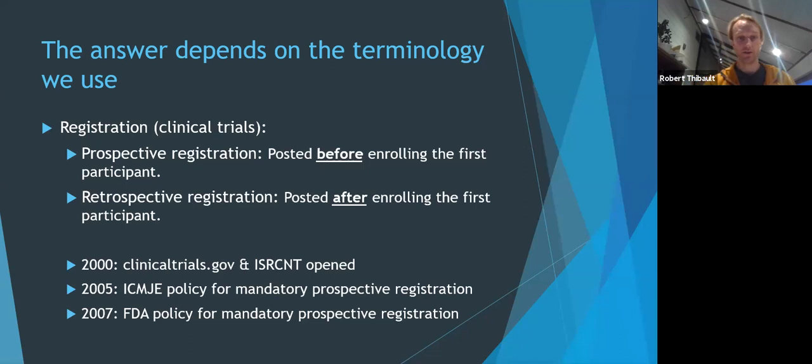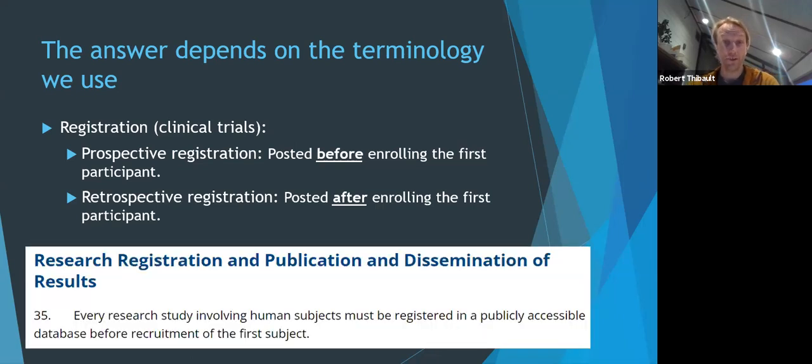In 2000, the year 2000 clinicaltrials.gov and other clinical trials registries opened and then in 2005 the International Committee of Medical Journal editors made a policy that says if you want to publish in our journals you have to prospectively register your study and then thousands of journals have signed on to that policy. Then in 2007 the Food and Drug Administration made a policy that clinical trials must be prospectively registered. And then also the Declaration of Helsinki has this item in it that says every research study involving human subjects must be registered before recruitment of the first participant. And so any study that says they've conducted their study in line with the Declaration of Helsinki must have been or should have been pre-registered.